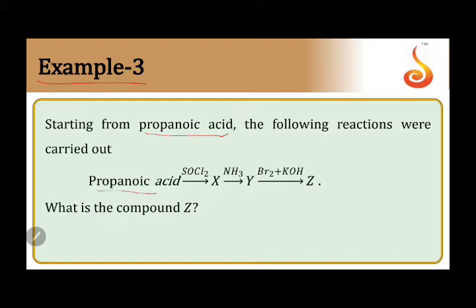Propanoic acid reacts with SOCl2 (thionyl chloride) to give compound X, then ammonia is added to obtain compound Y, and finally bromine in KOH gives compound Z. The question is: what is compound Z?